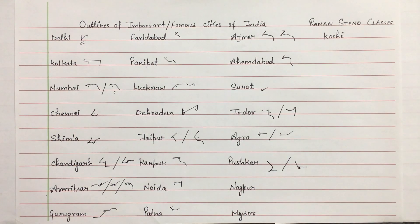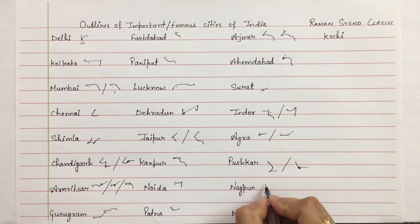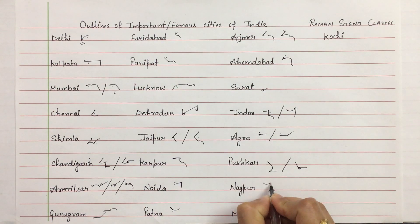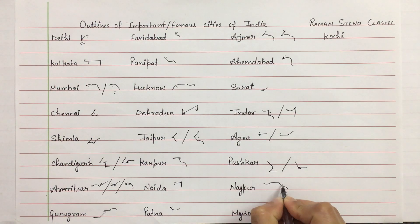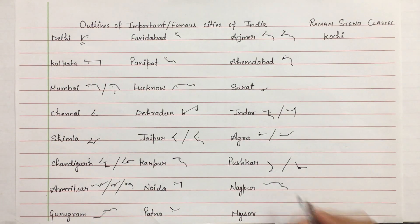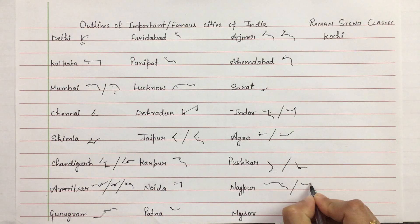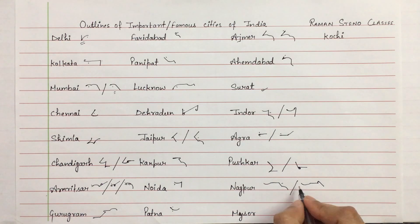Nagpur — above the line. N, Gay, and Pur. Nagpur. Or you can also use hook with B. Nagpur.